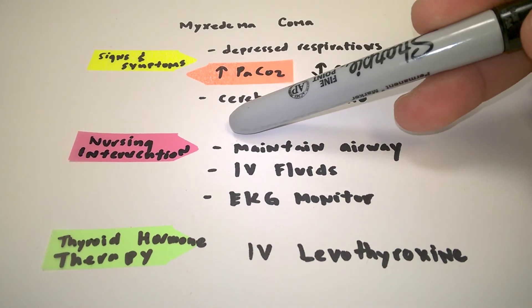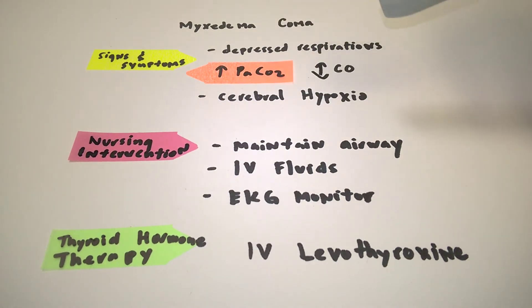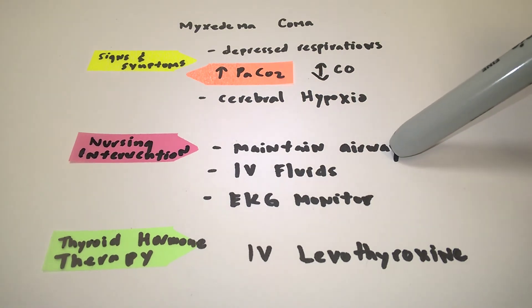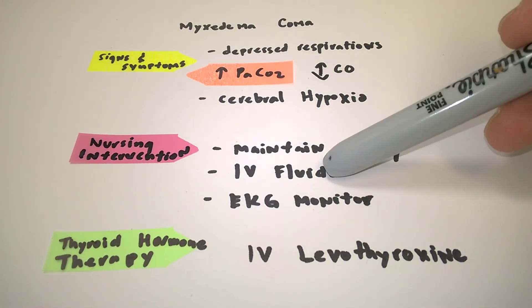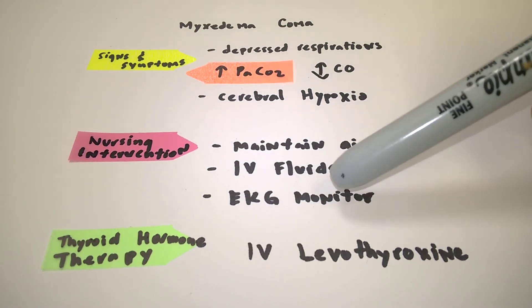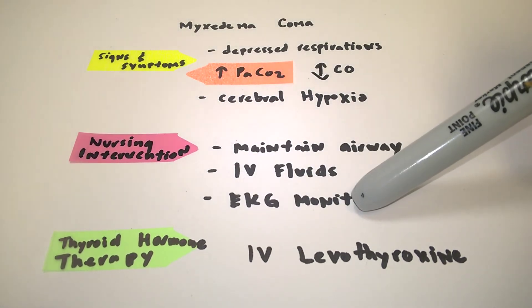So what are the main nursing interventions that we need to do? Basically, we need to maintain our airway, we need to have IV fluid replacement, and we also need to provide continuous EKG monitoring with our patient.